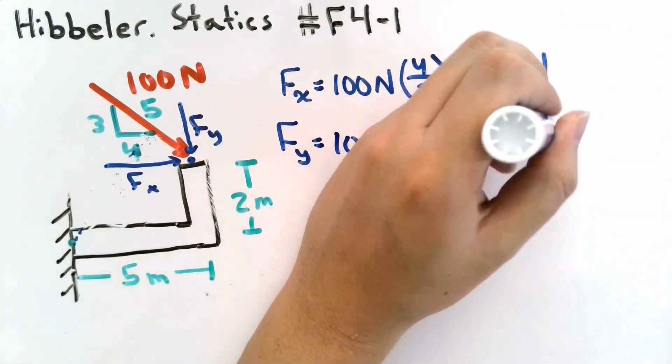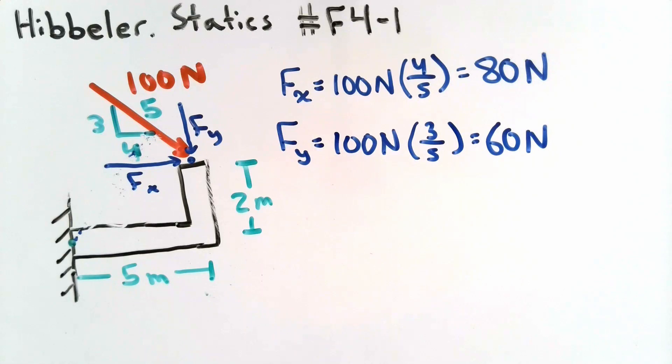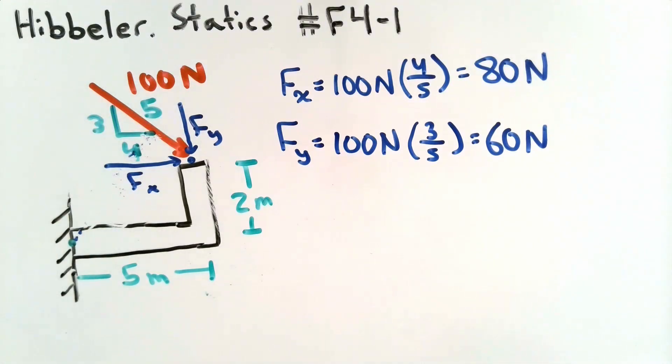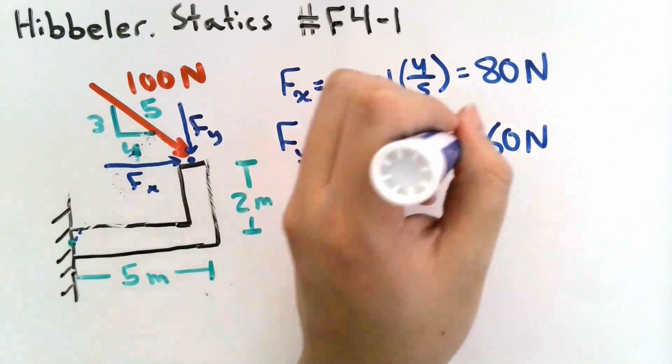Similarly, the Y component of the force should be equal to the product of the magnitude, times the sine of the angle. In this case, the sine of the angle is the opposite side over the hypotenuse, that is 3 over 5. However, let's note that the Y component is acting in the negative Y direction, so we'll add a negative sign to our answer.